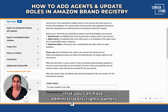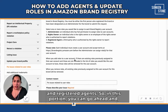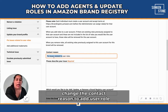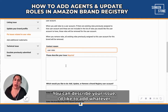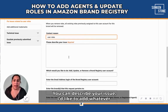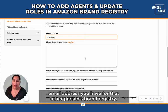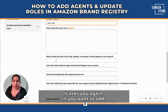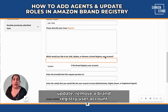There are three different kinds of roles that you can have: administrator, rights owner, and registered agent. In this portion, you can go ahead and change the contact reason to add user role. You can describe your issue — for example, 'I'd like to add' and then whatever email address you have for the other person's brand registry. It also asks whether you want to add, update, or remove a brand registry user account.